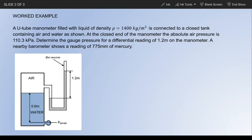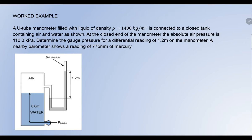In this particular problem, as soon as I look at the picture I can see it's a U-tube manometer problem. It is filled with a liquid of density rho = 1400 kg/m³. The liquid they are talking about is this particular gray color liquid, which has a density of 1400 kg/m³. It is connected to a closed tank containing air and water.